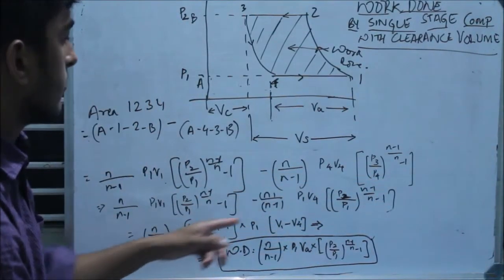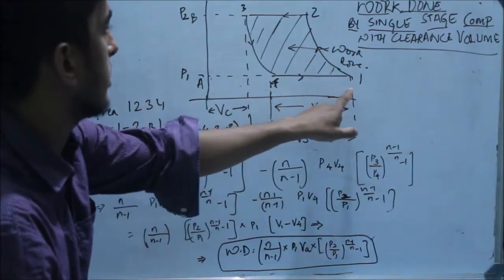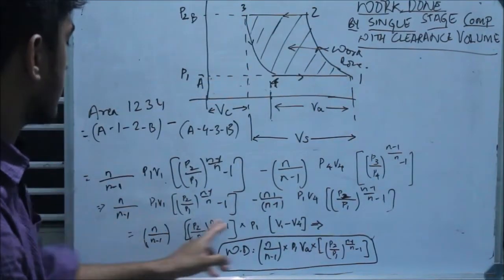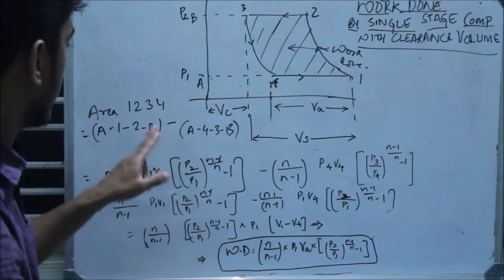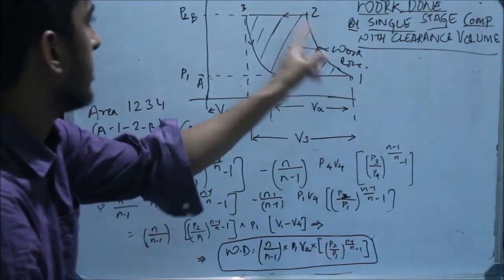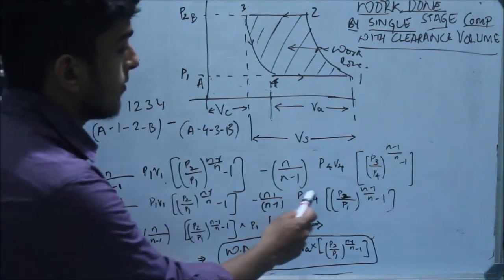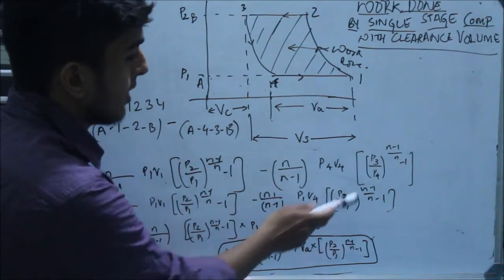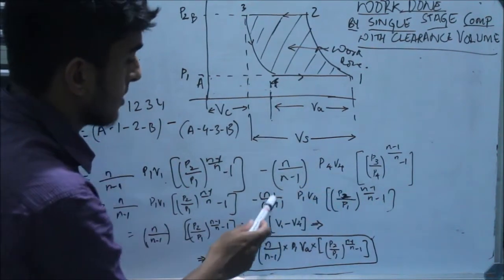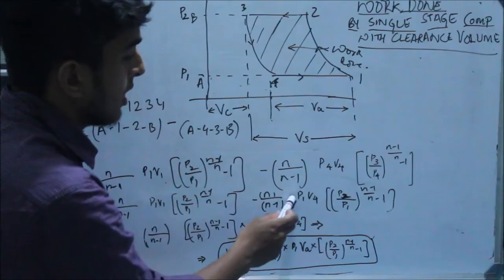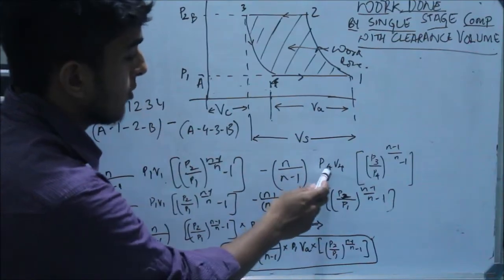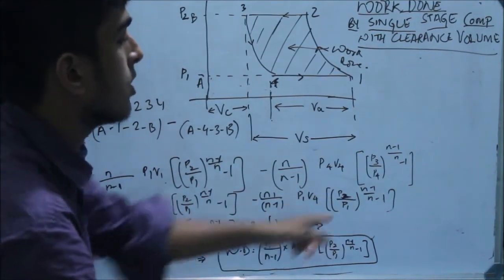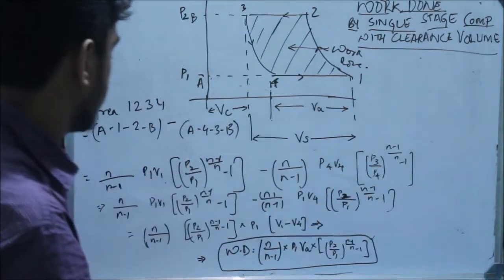Further simplifying: we know that P4 is nothing but P1, and P3 is nothing but P2. So we write the expression for A12B as it is. But when we come to A43B, we replace P4 by P1 and P3 by P2. So this becomes N over (N minus 1) into P1 V4 into (P2/P1) to the power (N minus 1)/N, minus 1.